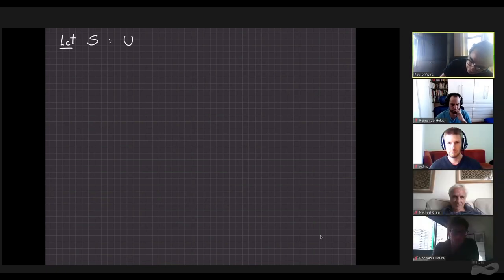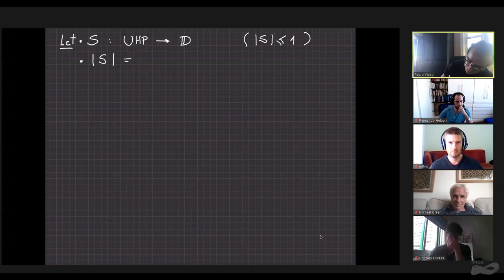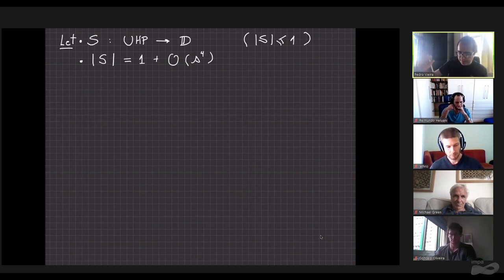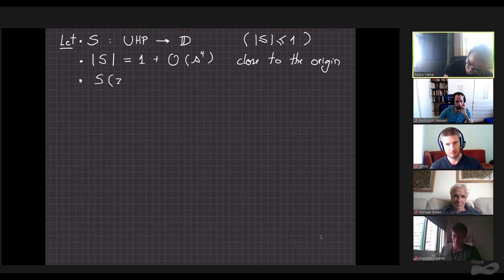Let's suppose we have a function S that is a map from the upper half plane to the unit disk. In other words, this is just a statement that this function S is bounded — it's smaller or equal than 1. It's a holomorphic function. Close to the origin, which is at the boundary of the unit disk, this function has absolute value very close to 1, namely it's 1 up to some small s to the 4. I will use s for the value that parameterizes the complex plane, and in particular the upper half plane. And then it has a reality condition: S conjugated equals S at minus Z conjugate. You see that minus Z conjugate is also in the upper half plane.